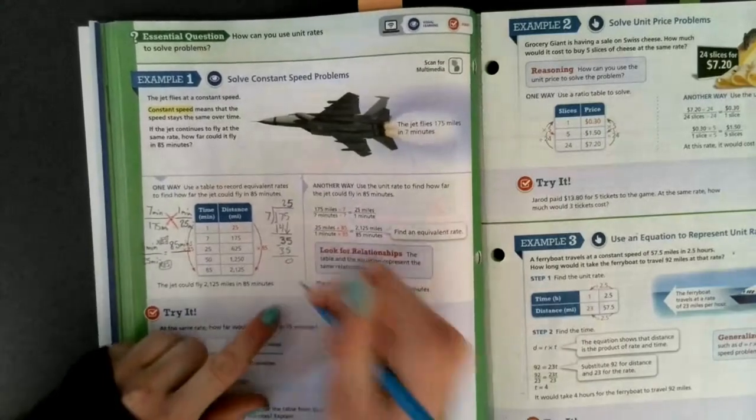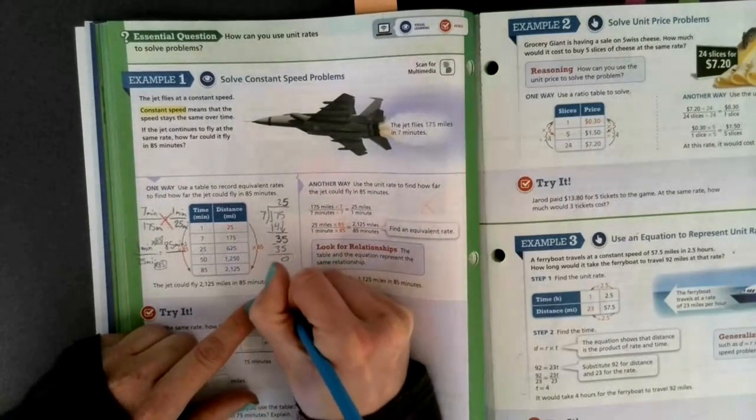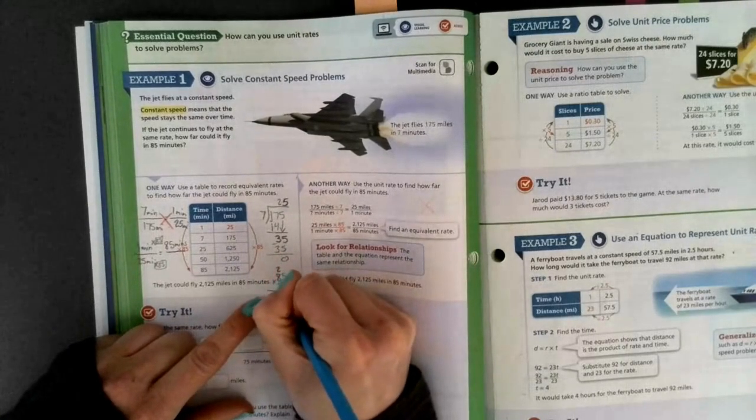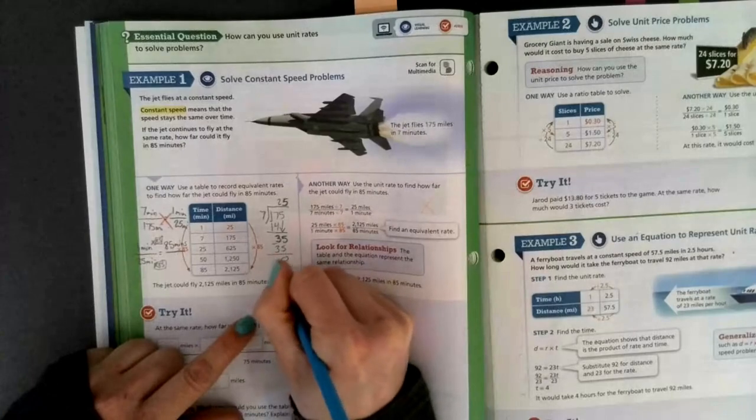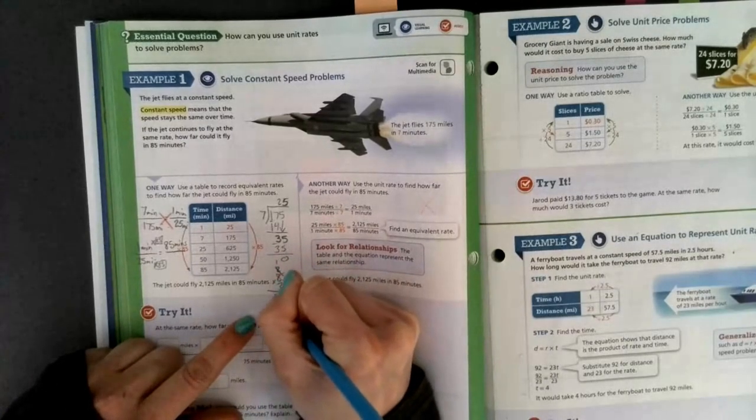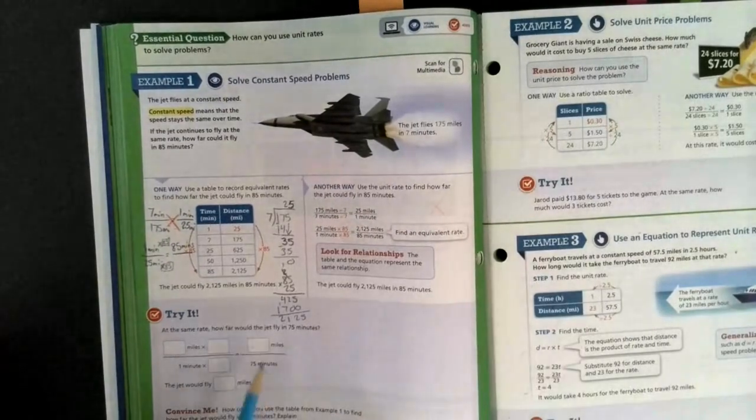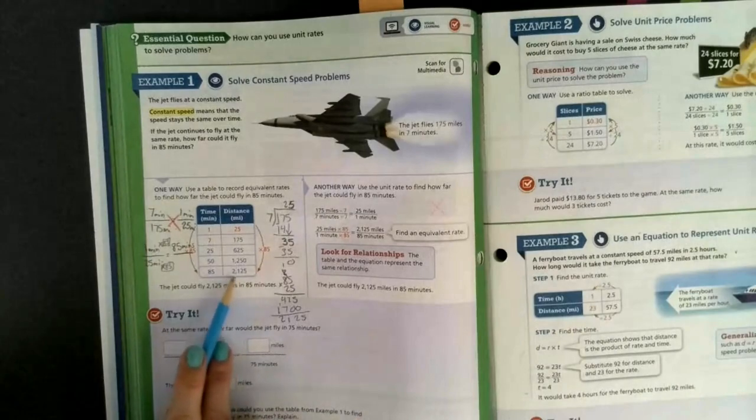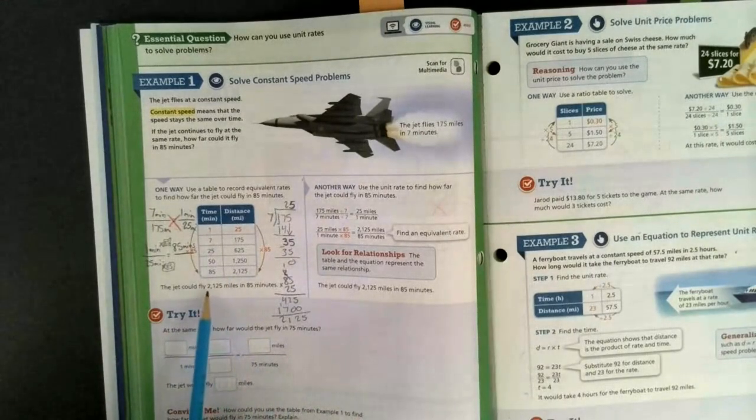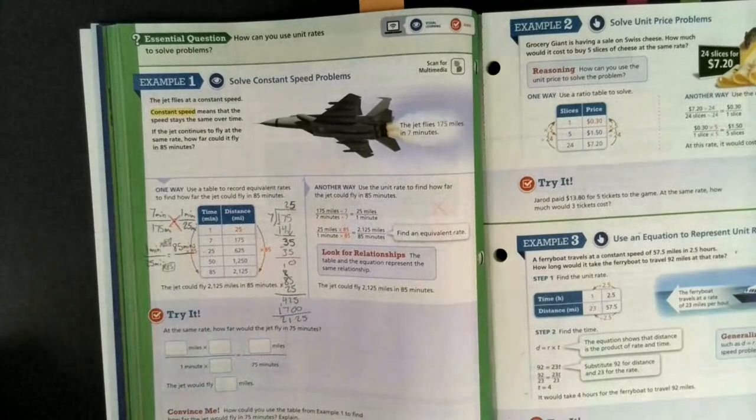I can use my crisscross or in this case, since I'm going from one to 85, it's easy for us to look and see that we are multiplying both by 85. If I take my 85 times 25, I get 2,125. So now I know it can fly 2,125 miles in 85 minutes.